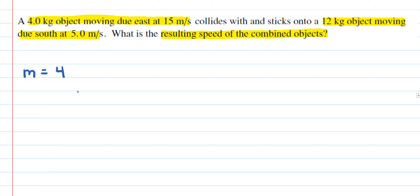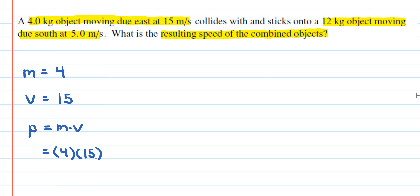The first object has a mass of 4 kilograms and its velocity is 15 meters per second going in the east direction. Momentum is the mass times velocity, so if I take 4 kilograms times 15 meters per second, we have a momentum of 60 kilogram·meters per second going in the east direction.